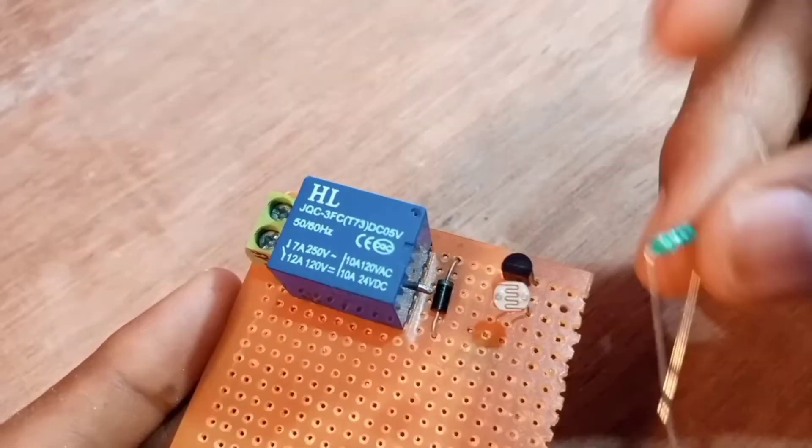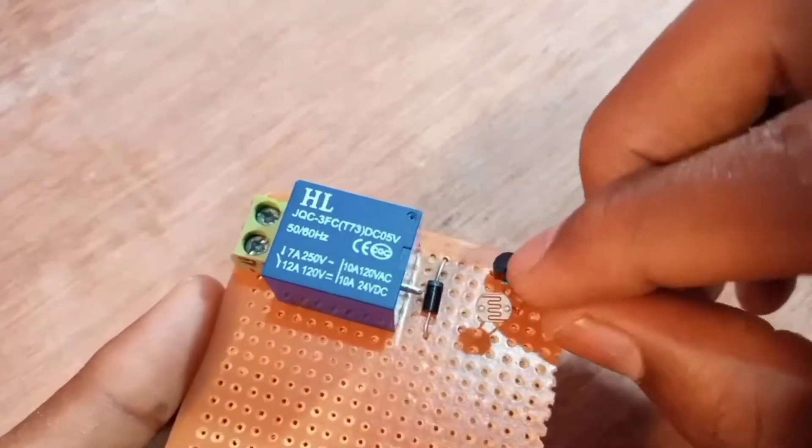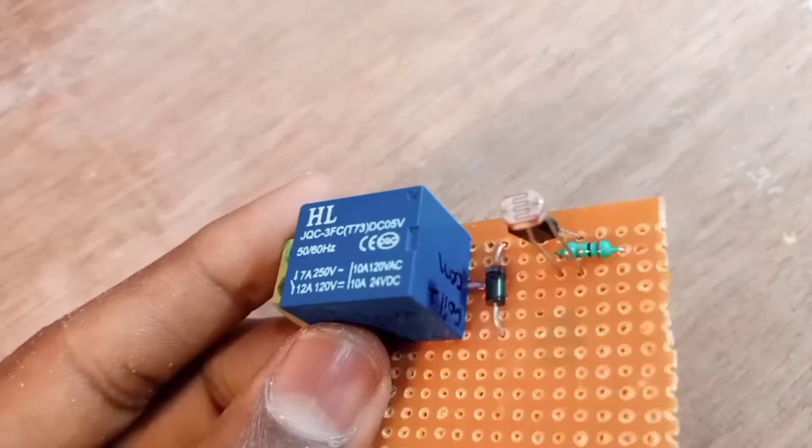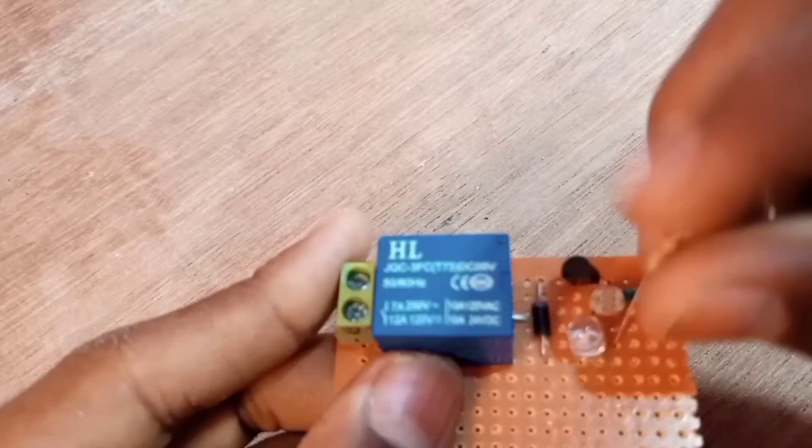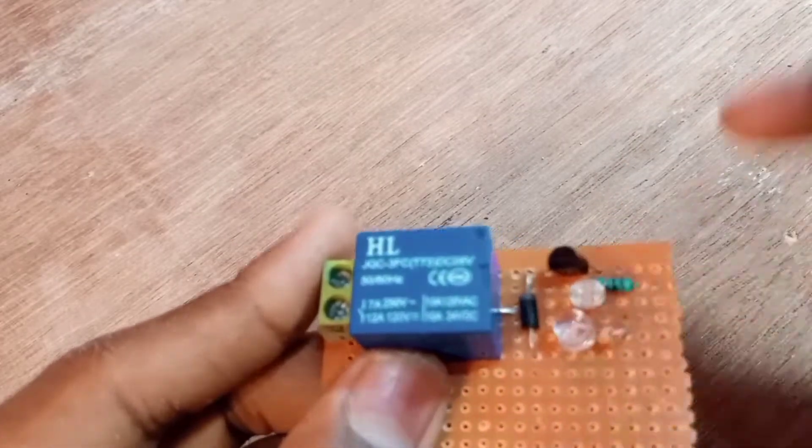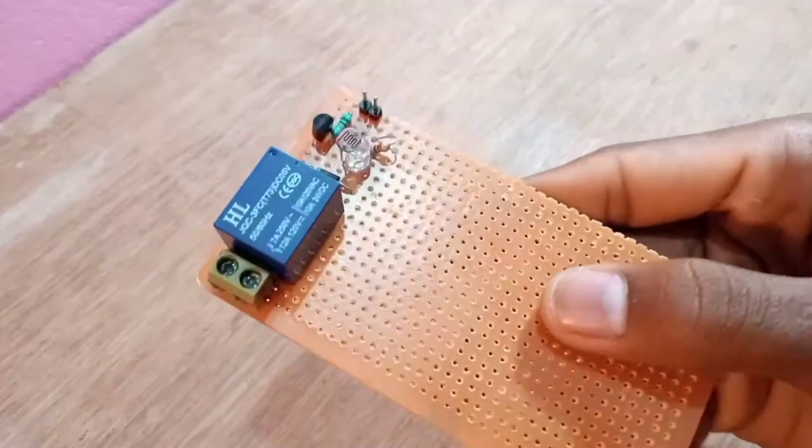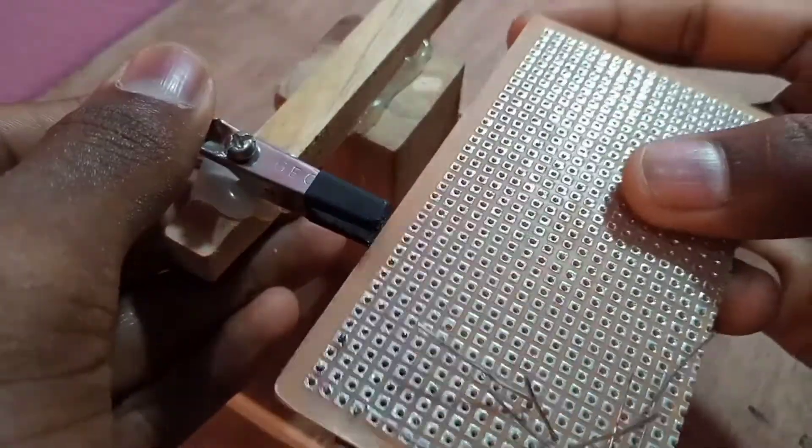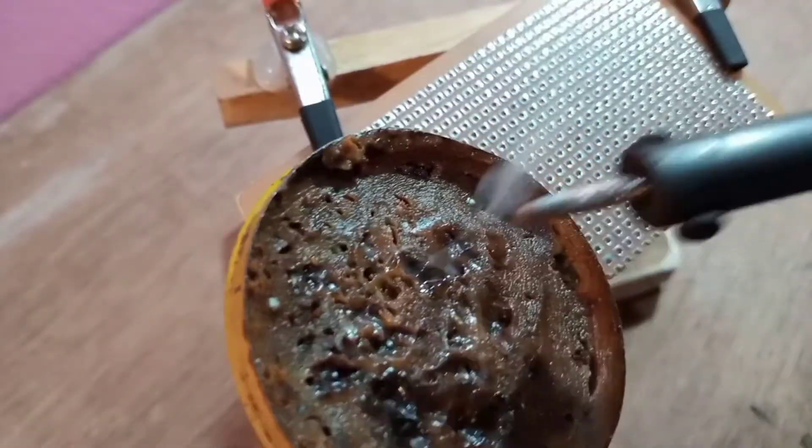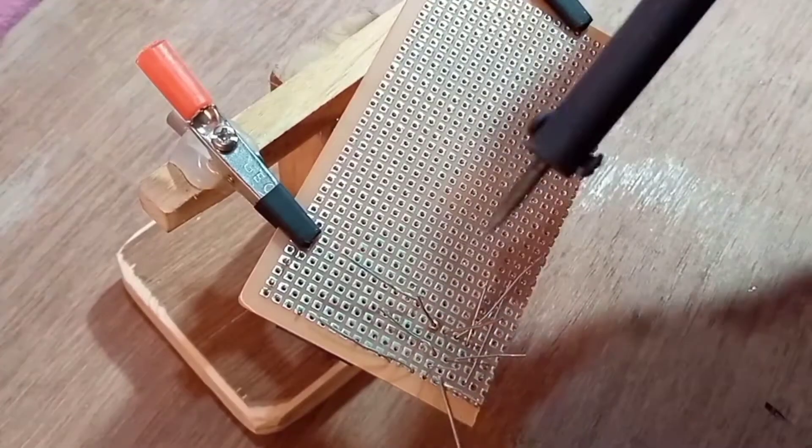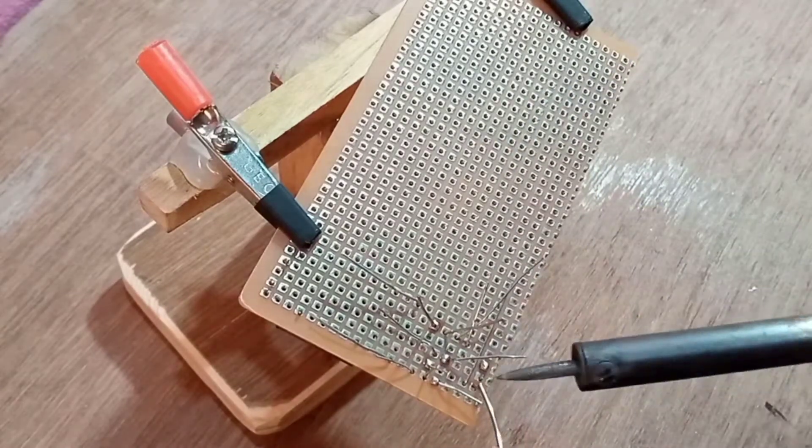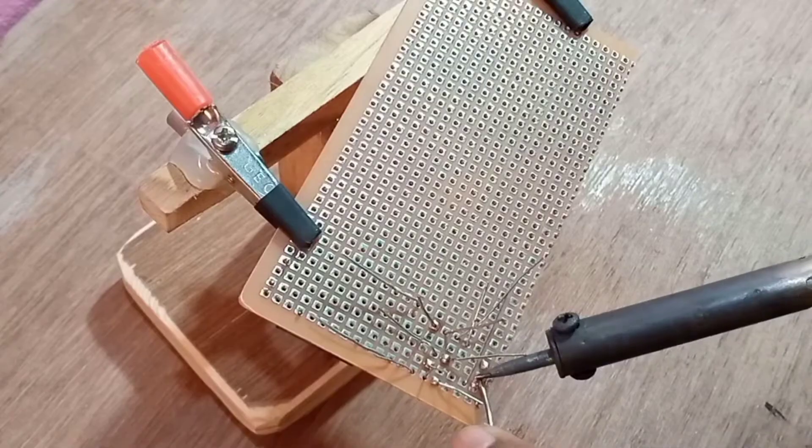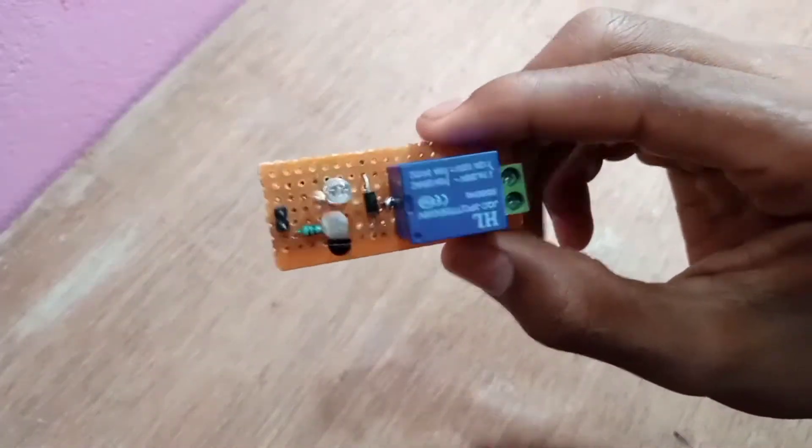Place all the components one by one on the PCB board. After placing all the components it should look like this. Don't forget to solder the components on the PCB board. Yeah, it's really perfect.